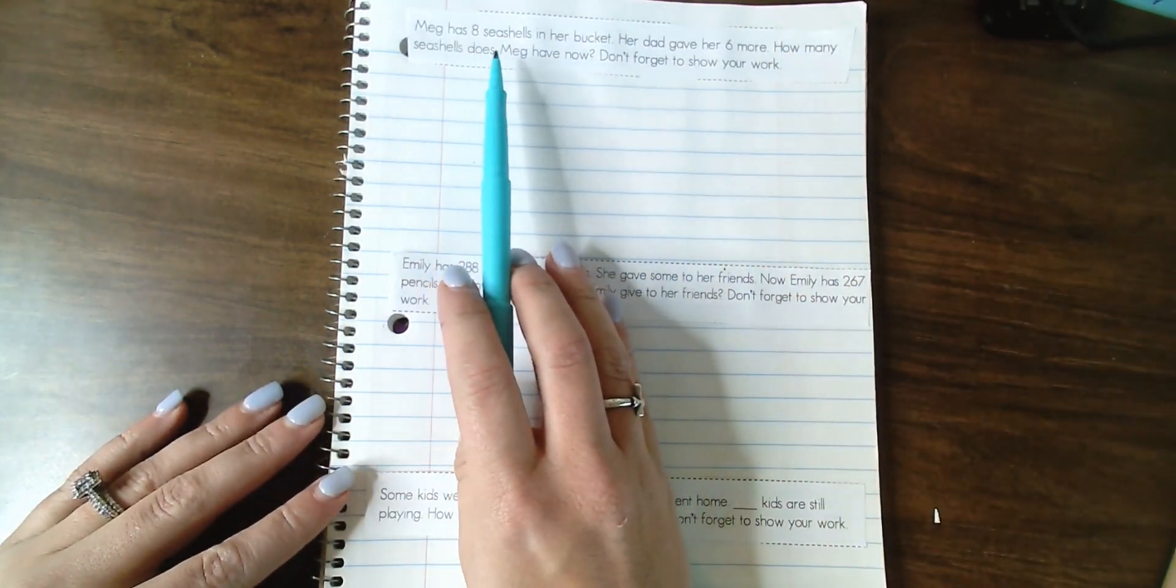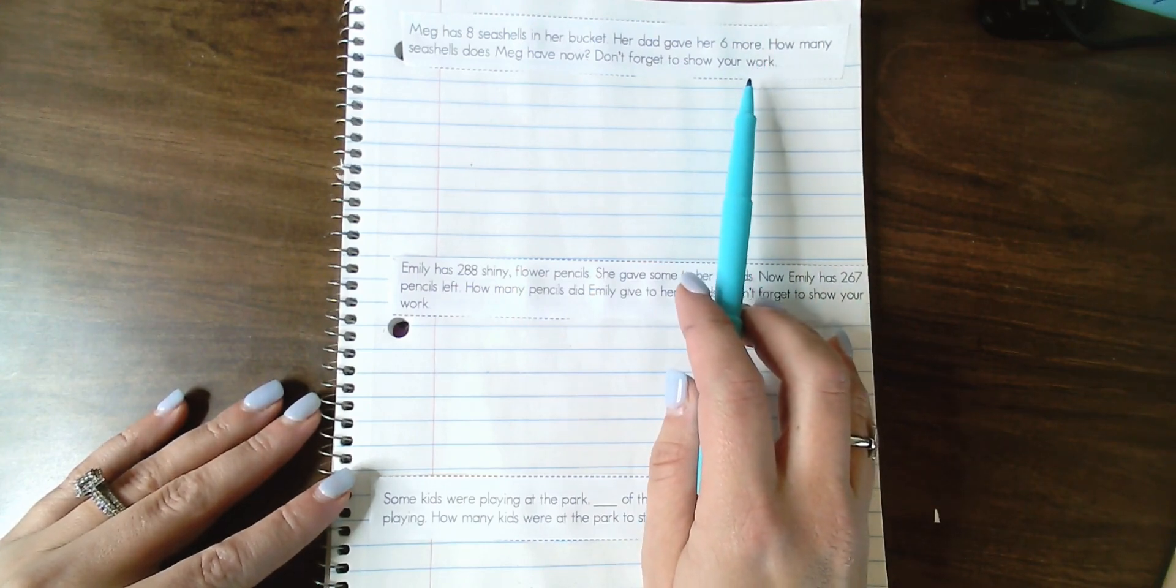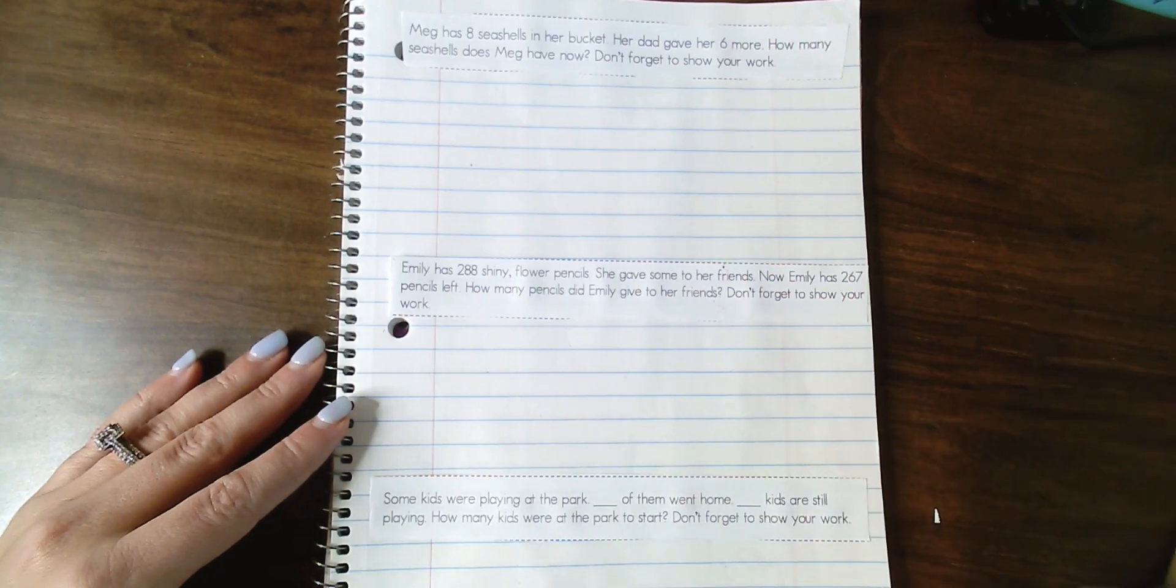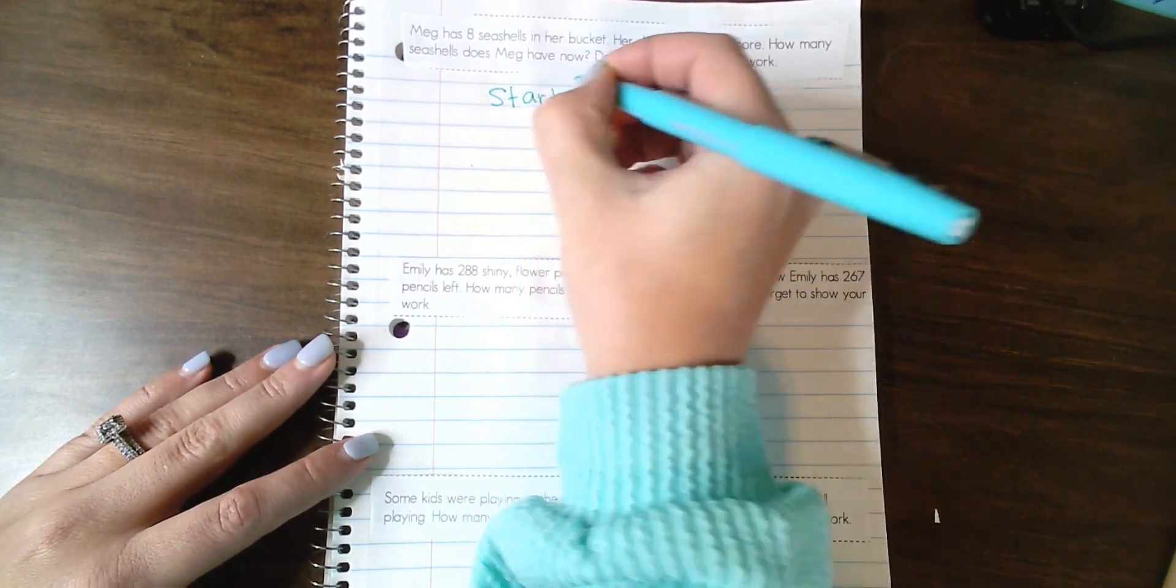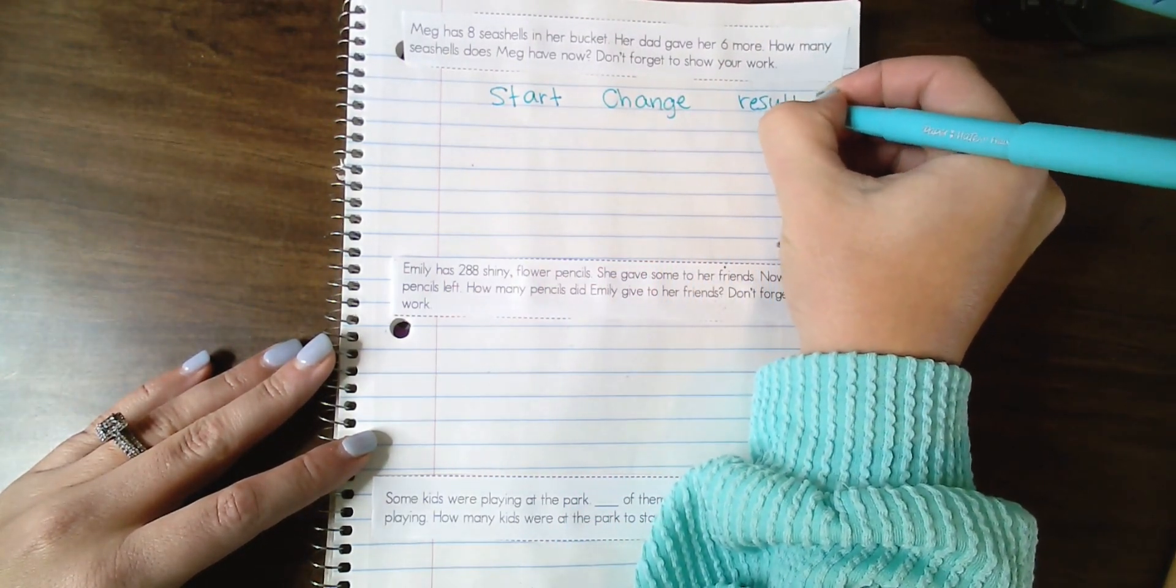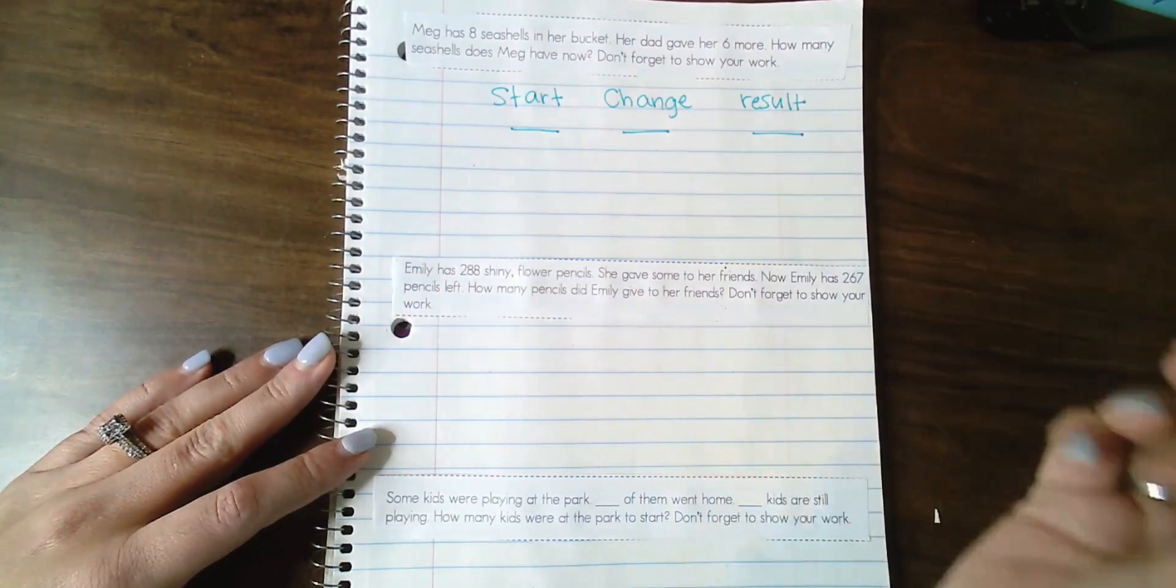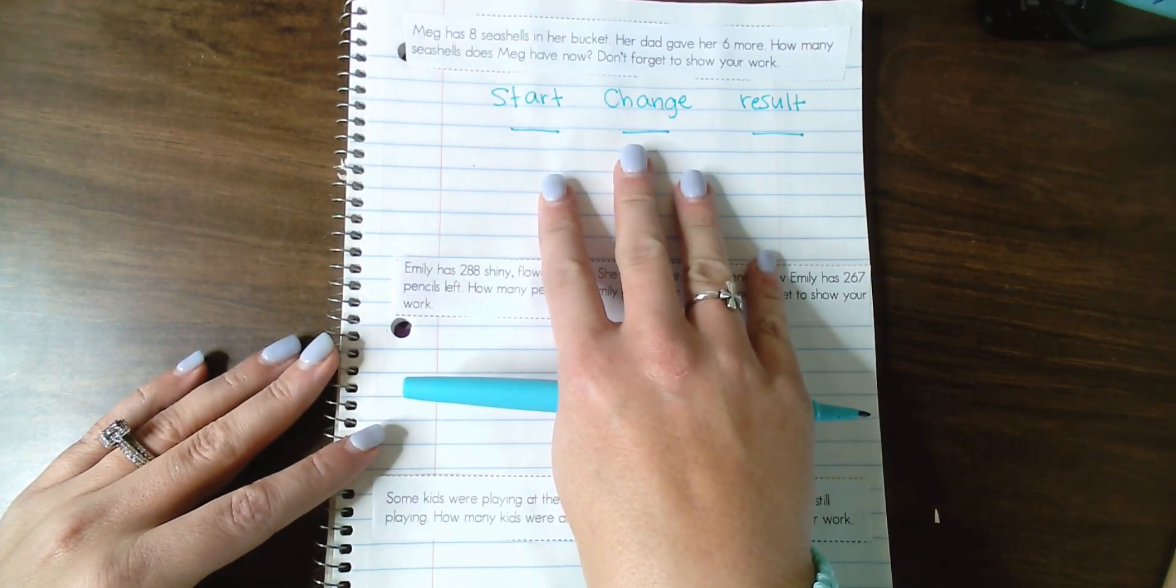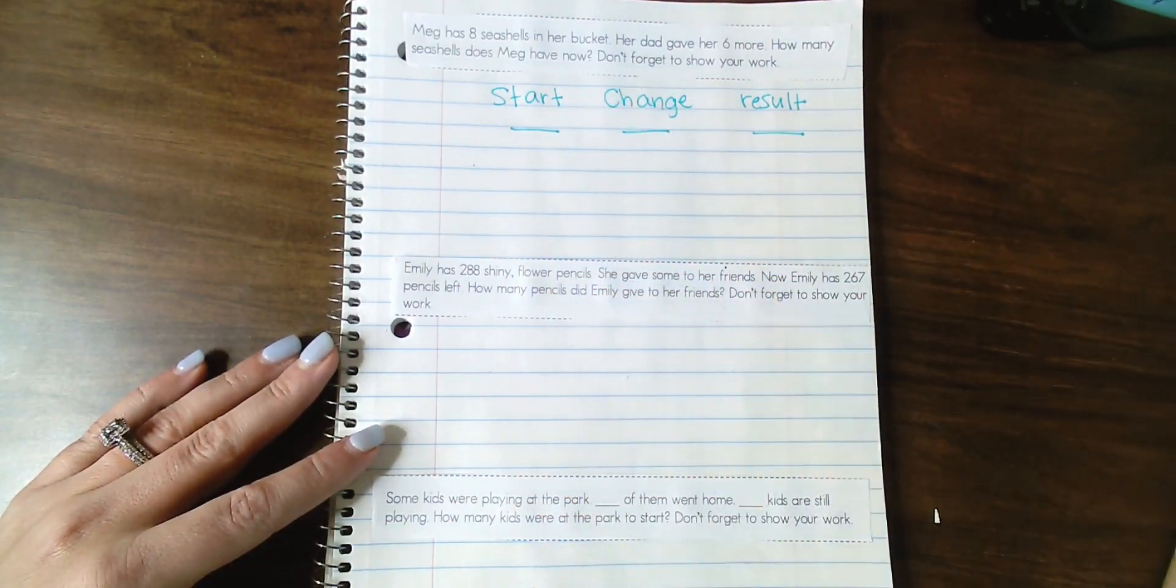So first, we would read our problem out loud together. Then underneath, we are going to write start, change, result. Meg has eight seashells in her bucket. Her dad gave her six more. How many seashells does Meg have now? We're going to start out and we're going to write start, change, result. And then underneath start, change, result, I'm going to draw three blanks. We don't know if we're adding or subtracting yet. So this is really great because it's helping us set up the problem for what operation we need to do.